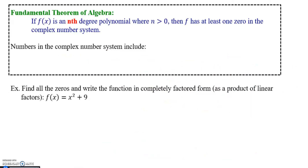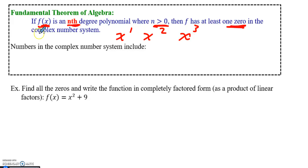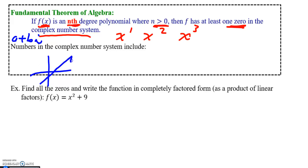Now to the main part of this video — the fundamental theorem of algebra. What this states is, if you have a polynomial of nth degree where n is bigger than zero, meaning something like x to the first, x to the second, or x to the third, at least one of your zeros has to be in the complex number system. A complex number is in the form a plus bi. So the theorem is saying that you have at least one zero in the complex number system.